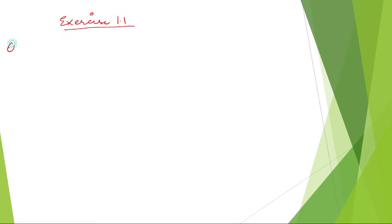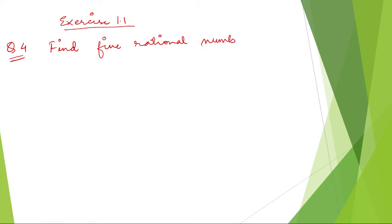In this video, we are going to do exercise 1.1, question number 4: Find 5 rational numbers between 1 by 4 and 1 by 3.